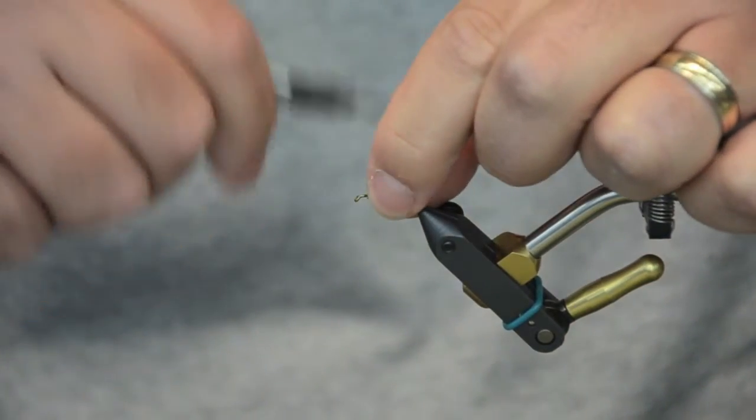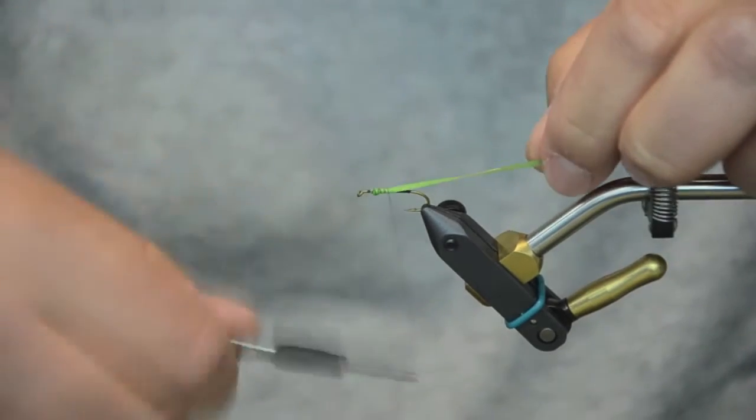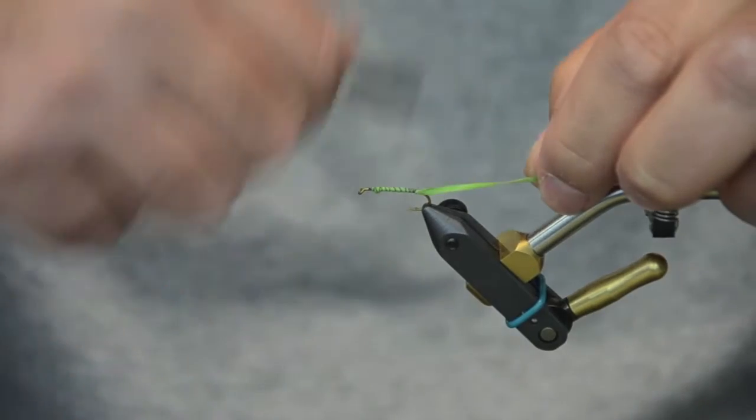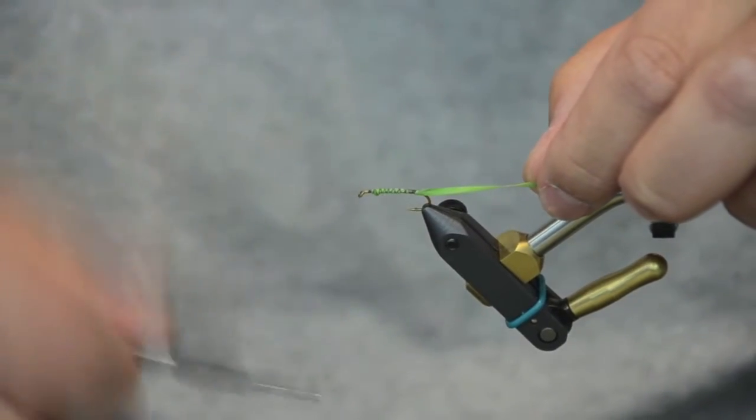I'm going to tie this in up near the head and just pull it tight. Not real tight. You can stretch this stuff to the point where it will break. I'm going to run it back a little further than normal under the bend of the hook.